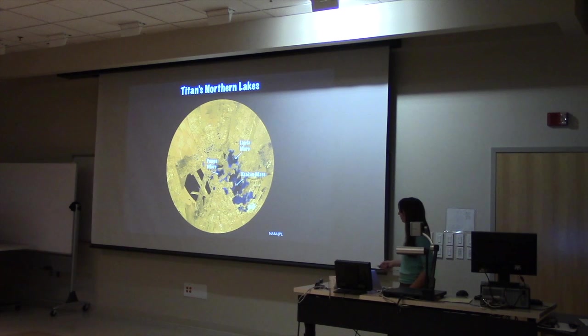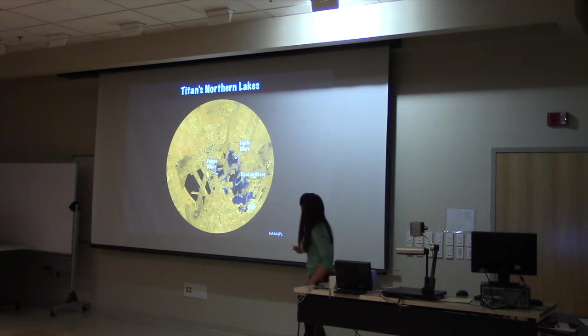So this is what Titan's northern pole looks like. And these are radar images. This is a composite of many radar images. You can see there's a linear pattern to this data. Radar data comes in swaths. So it really just looks like a big strip of data.